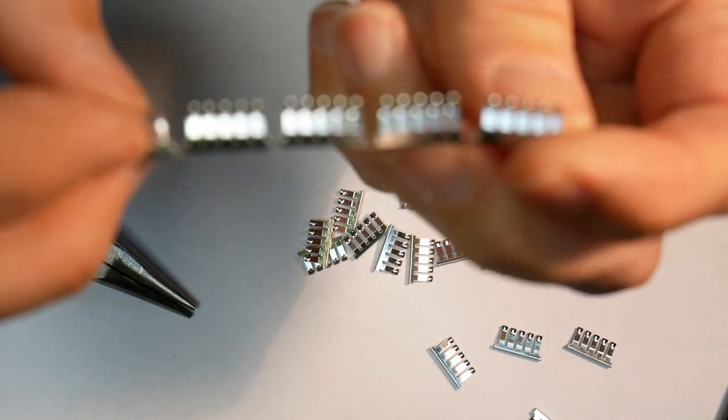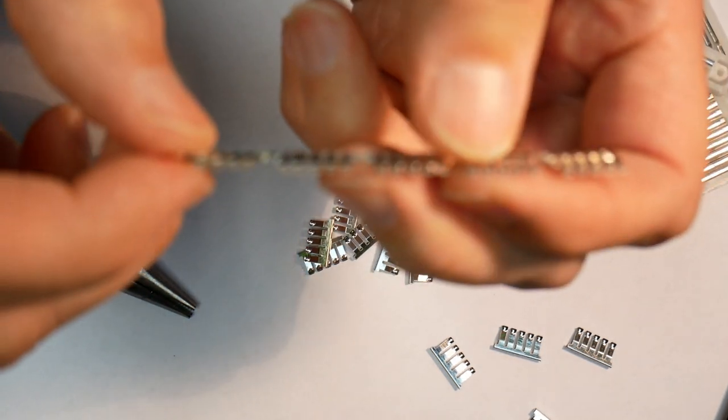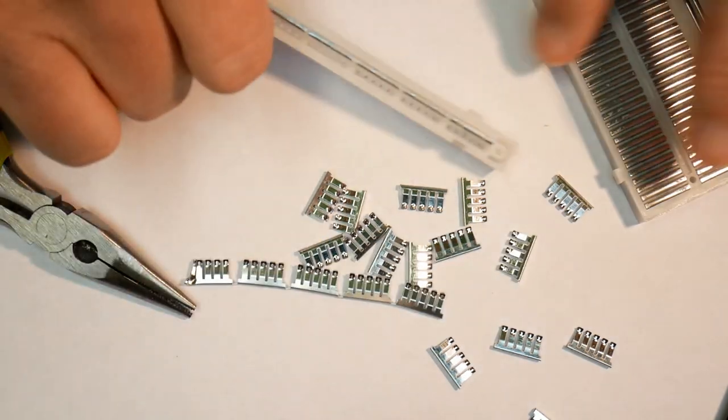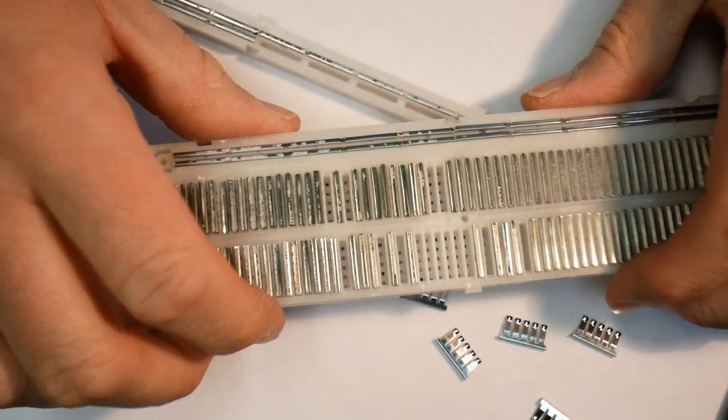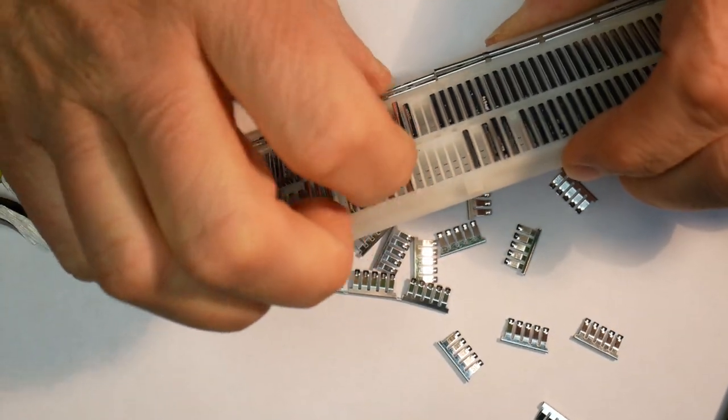They just left them together. So they probably manufactured these in long ribbons, cut them off, and then had them press inserted here probably by some automated machine.